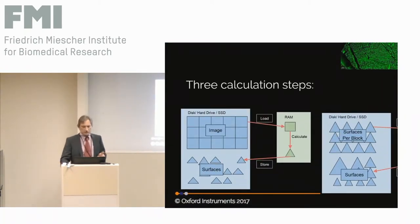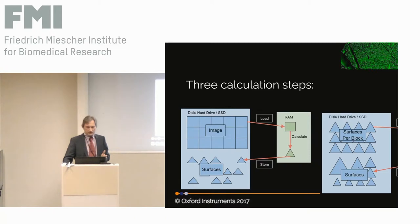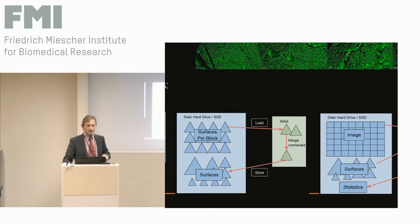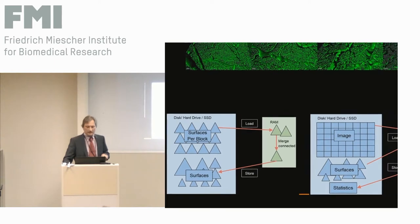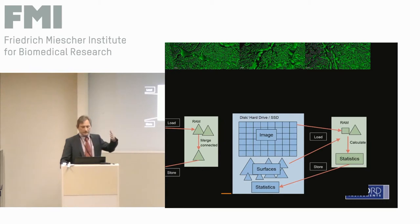The workflow idea: we have the original image, we take a block of it at the resolution which is really necessary, depending on the resolution needed in the output model. Then we calculate triangles and store this. Then, from the surfaces — because they are block-wise — we have to merge them into the objects. This is the second step. In the last step, we load the merged surfaces and accordingly the data blocks on the original dataset, and we create the statistics like the intensity statistics.